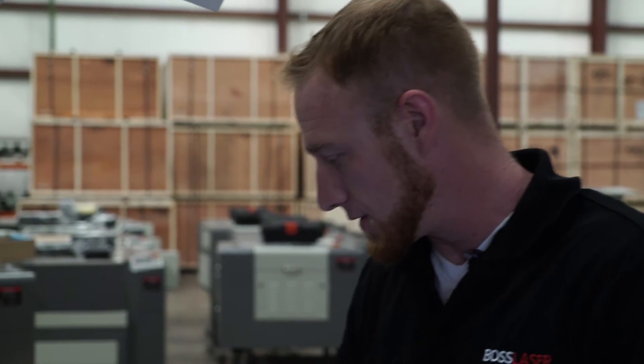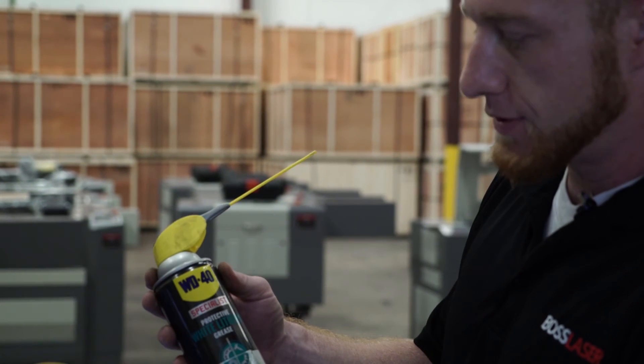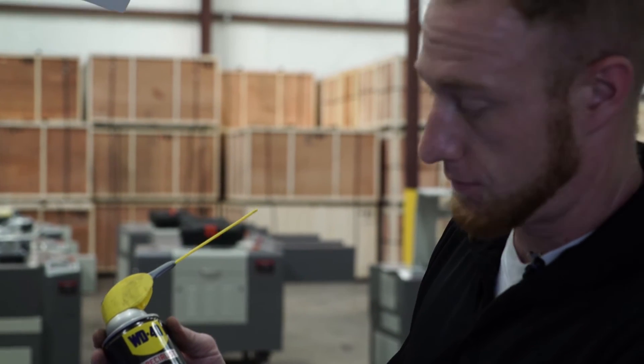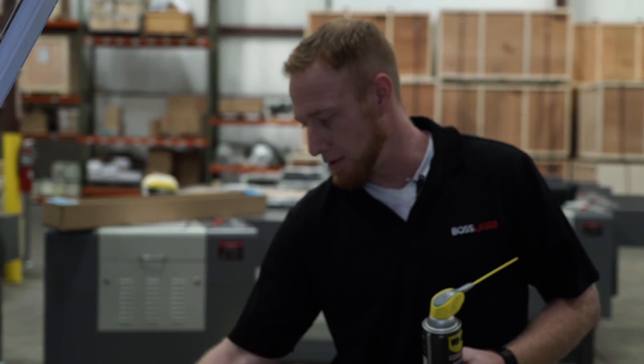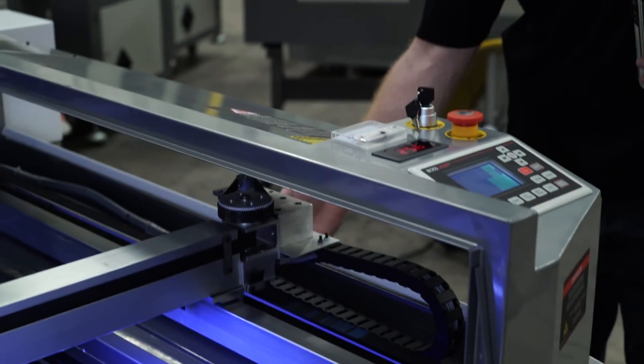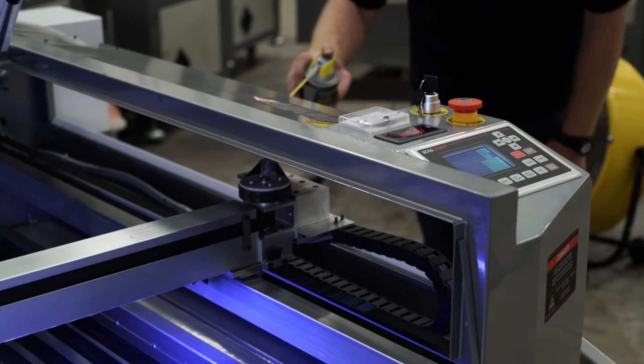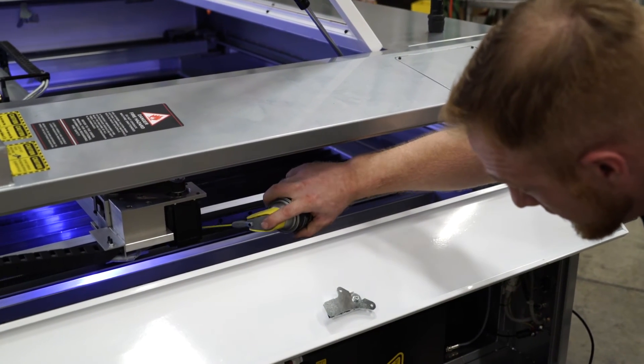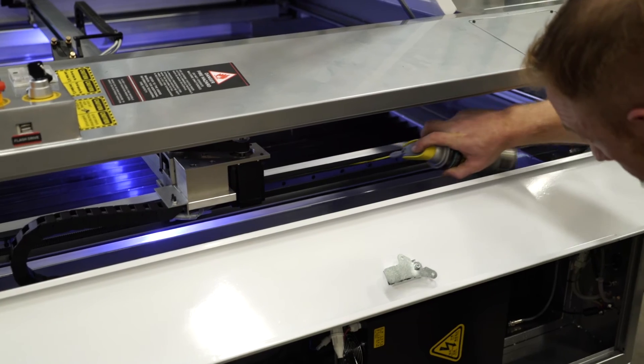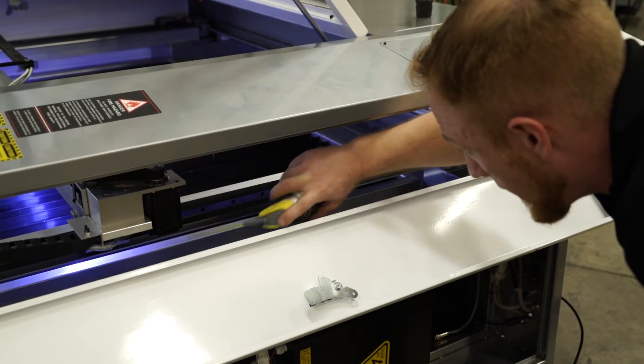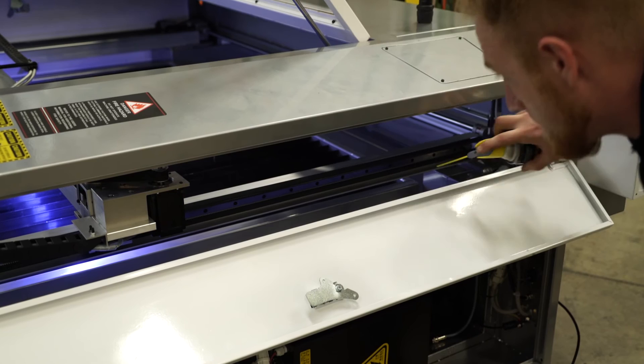Next we're going to be lubricating the side rails, which is a good part of the maintenance. We use WD-40, protective white lithium grease. Come over here to the top side panel, drop that down. You're going to apply it to the top of the inside rail, where the bearings slide on, and the bottom. Apply it to both sides, and you should be good to go.